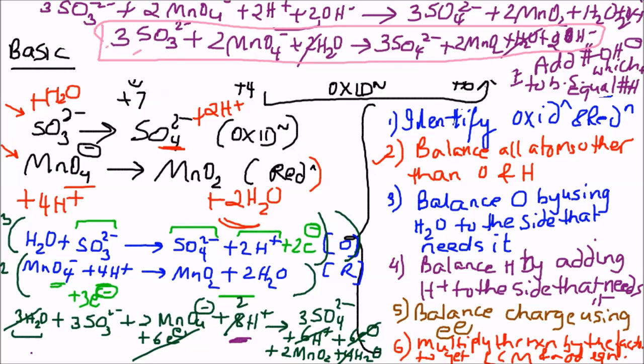Let's quickly verify: three sulfurs on each side — good. Oxygens: three times three is nine plus one from water equals ten on the left; three times four is twelve plus four from MnO2... checking systematically confirms oxygens balance to 18 on each side. Two manganese on each side. Two hydrogens on each side. Charge: six negative from sulfite plus two negative from permanganate equals eight negative on the left; six negative from sulfate plus two negative from hydroxide equals eight negative on the right. Balanced.